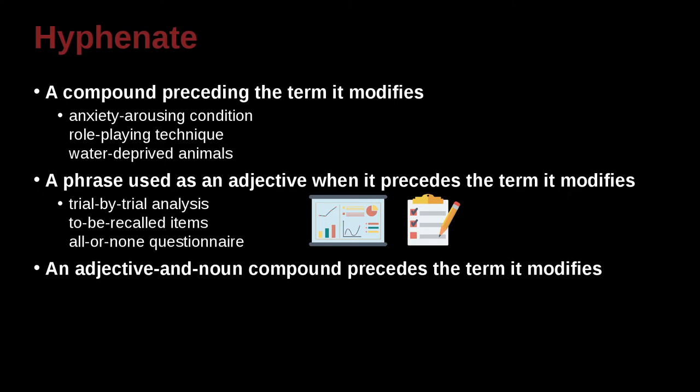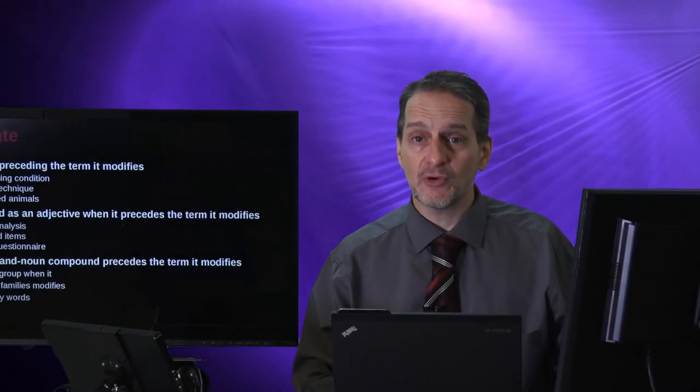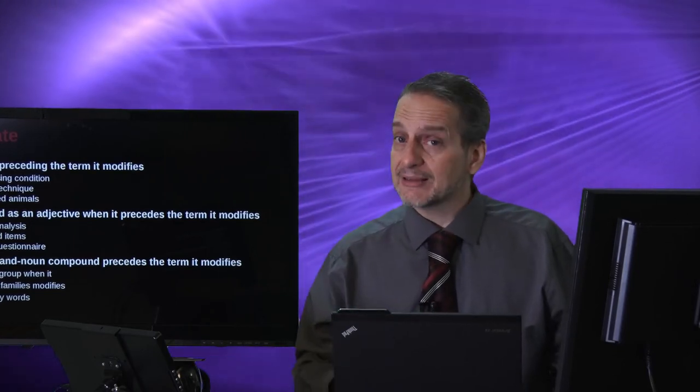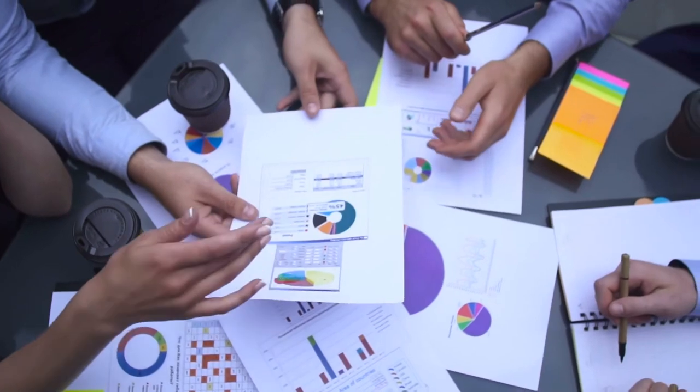You can also do this when you have an adjective-noun compound that precedes the term it modifies. For example, high-anxiety group, middle-class families, low-frequency words. So you can see the same idea. This is very normal in your research, but you don't want to go crazy with it and be putting this everywhere. Make sure that it really is just to help sometimes the flow of your reading. I think it's especially helpful when we're talking about things like the methodology of your research because that can at times get complicated with many of these words that are strung together.